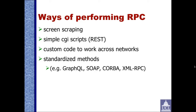There are a number of different ways of performing Remote Procedure Calling. The first is what we refer to as screen scraping, which is essentially just writing some code that can download an HTML page and scrape the data out of it. The second is REST, which is really just providing a CGI script that, instead of returning data in HTML, returns data in some sort of simple text format that is easy to parse and extract information from. The third possibility is to write custom code to work across networks, which for the majority of purposes is really overkill. And the fourth method is to use standardised methods, such as GraphQL, SOAP, CORBA, or XMLRPC.